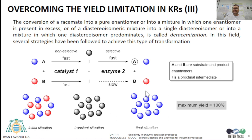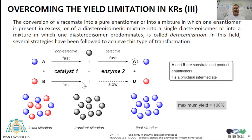The conversion of a racemate into a pure enantiomer or into a mixture in which one enantiomer is present in excess is called deracimization. Several strategies have been followed to achieve this type of transformation. Thus, starting from a racemic mixture, a non-selective transformation which transforms both enantiomers into an intermediate I can be coupled with an enzyme to give back selectively one of the substrate enantiomers, in this case A, ideally at 100%.